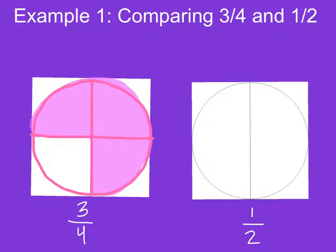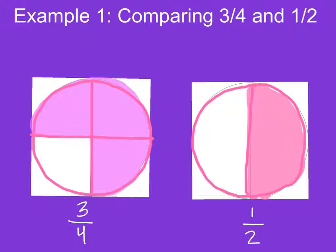However, notice the circle labeled one-half is only divided into two parts, instead of four parts like the three-fourths circle. This tells us that the total number of pieces in the circle is not divided in the same way. Therefore, we need a common denominator.